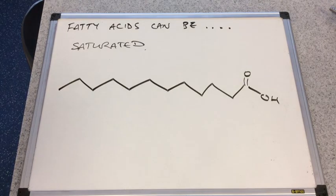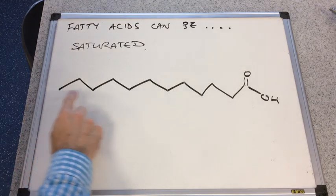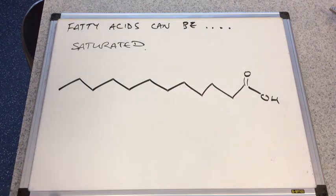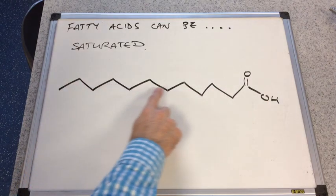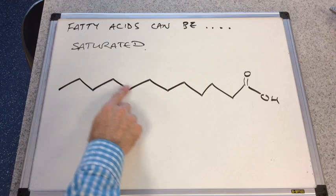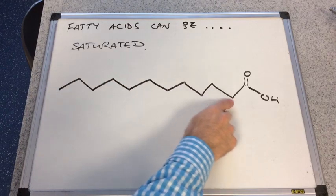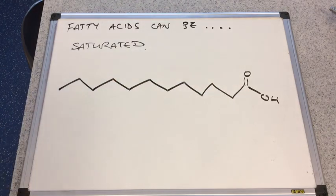So we'll start with saturated fatty acids. And if you remember from AS, saturated means there are only carbon-carbon single bonds in the molecule. So we've got this long carboxylic acid with carbon-carbon single bonds. 1, 2, 3, 4, 5, 6, 7, 8, 9, 10, 11, 12. So this is called dodecanoic acid. So 12 carbons is dodecanoic acid.